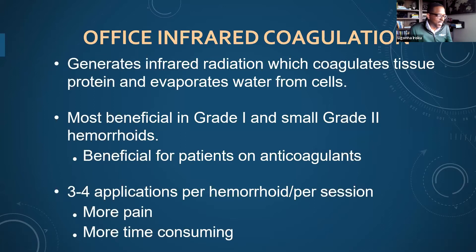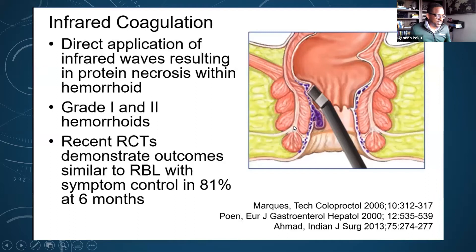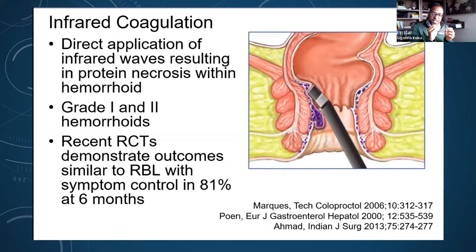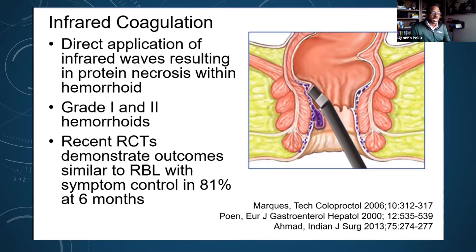We apply our probe on the inside of the rectum and treat the area above the dentate line, the origin of the internal hemorrhoids, shrinking them. The effect of the infrared coagulation progresses over time — with every passing day, the clotting off and sclerosing of the blood vessels leading to those hemorrhoids increases. Recent randomized controlled trials have shown that infrared coagulation is just as efficacious as the banding techniques, on the order of about 81% symptom control overall.